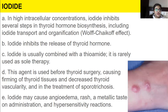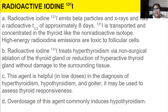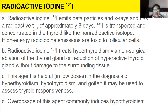Iodide at high intracellular concentration inhibits several steps in thyroid hormone biosynthesis, including iodide transport and organification, and inhibits release of thyroid hormone. Iodide is usually combined with thioamide and rarely used as sole therapy. It is used before thyroid surgery to firm thyroid tissues and decrease thyroid vascularity, and in the treatment of sporotrichosis (a fungal disease). Adverse effects include angioedema, rash, metallic taste, and hypersensitivity reactions. Radioactive iodine emits beta particles and X-rays with a radioactive half-life of approximately eight days. It is transported and concentrated in the thyroid like non-radioactive iodine, and its high-energy emissions are toxic to follicular cells. It treats hyperthyroidism via non-surgical ablation of the thyroid gland without damage to surrounding tissues, and is useful in low doses for diagnosis of hyperthyroidism and goiter.